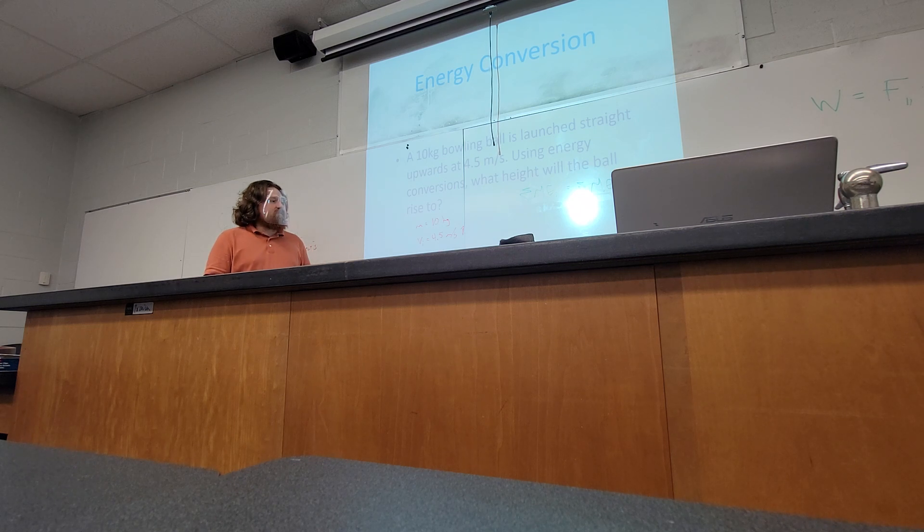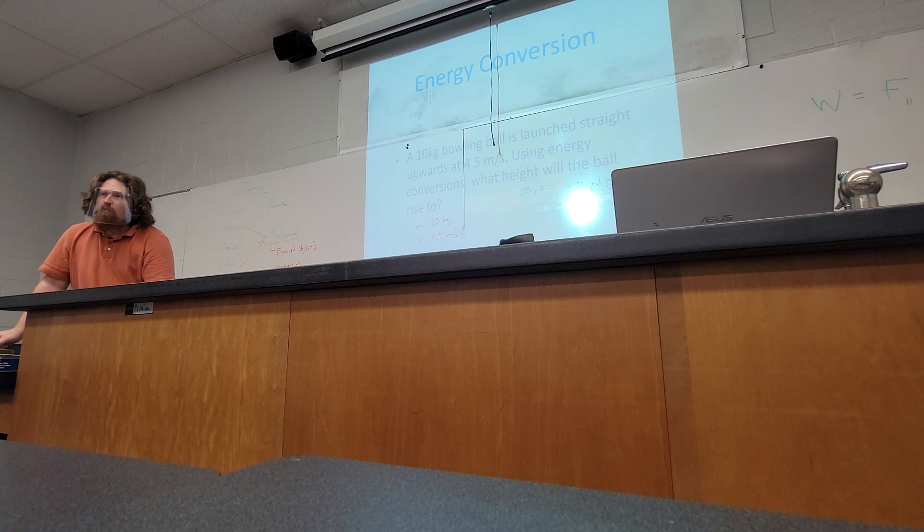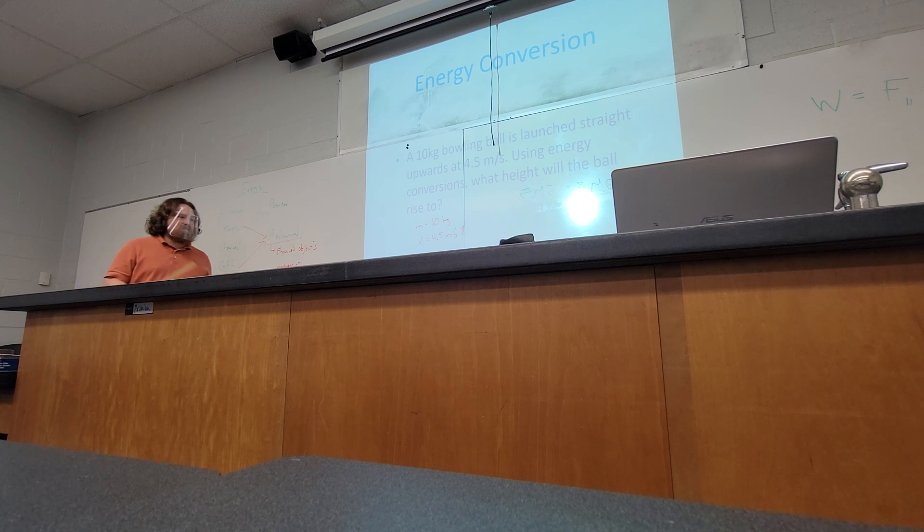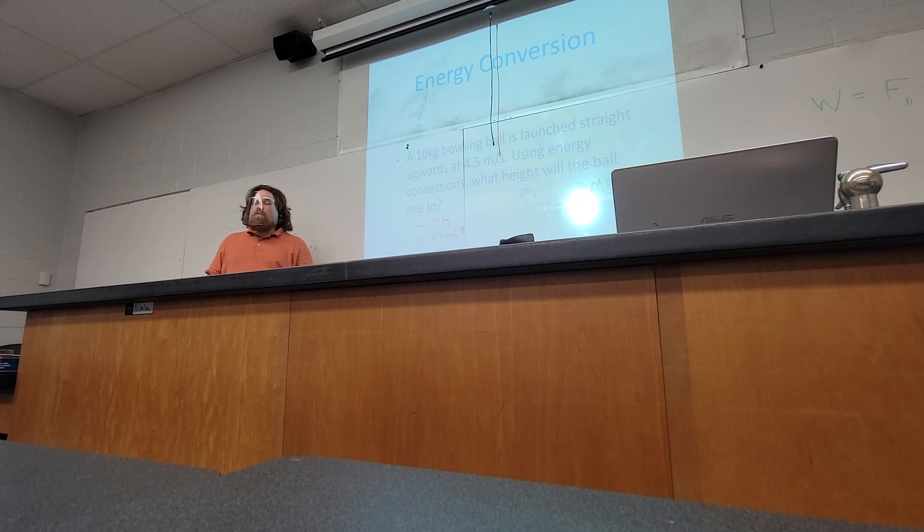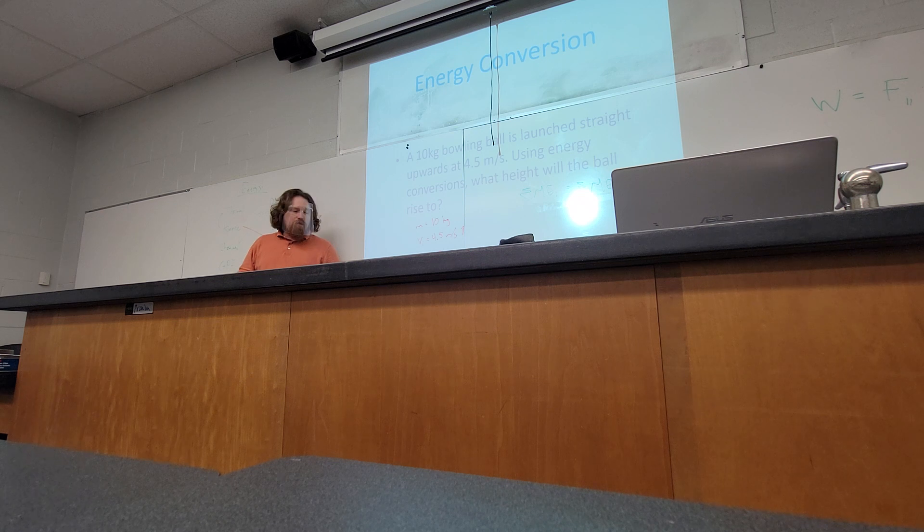And some additional pieces of information that we can pull from the description. Whenever you toss an object directly upwards, what is its vertical velocity at the moment it reaches its apex? Zero. For the split second it's at its max height, its velocity is technically zero. So, we know vf in addition to knowing vi. Additionally, because this takes place, it doesn't say that this doesn't take place on Earth. So you can safely assume that this does take place on Earth. So, g is going to be 9.8 meters per second squared downwards.